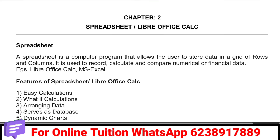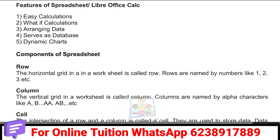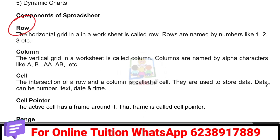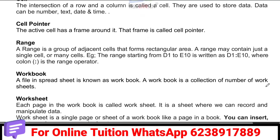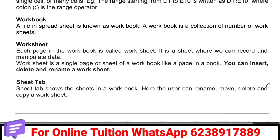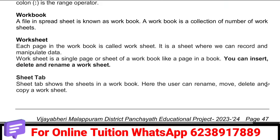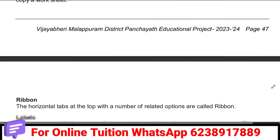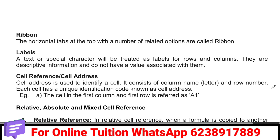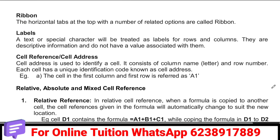Now we will learn about Spreadsheets. In the spreadsheet, there is a row. We will cover: What is a row? What is a column? What is a cell? What is a range? What is a workbook? What is a worksheet? What is the default? We will learn about all these things.